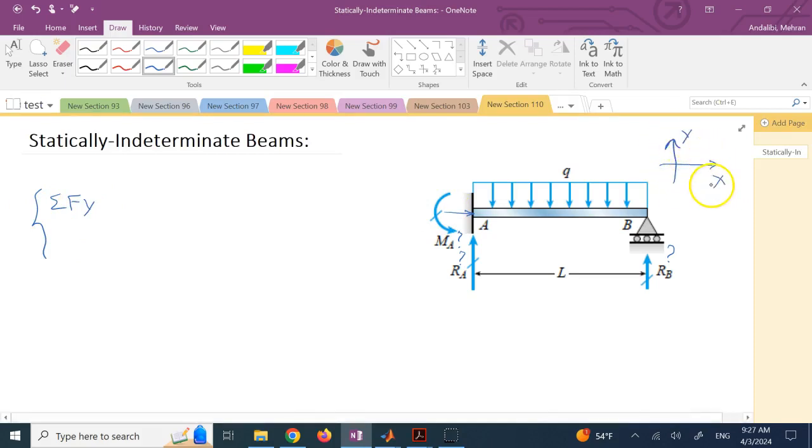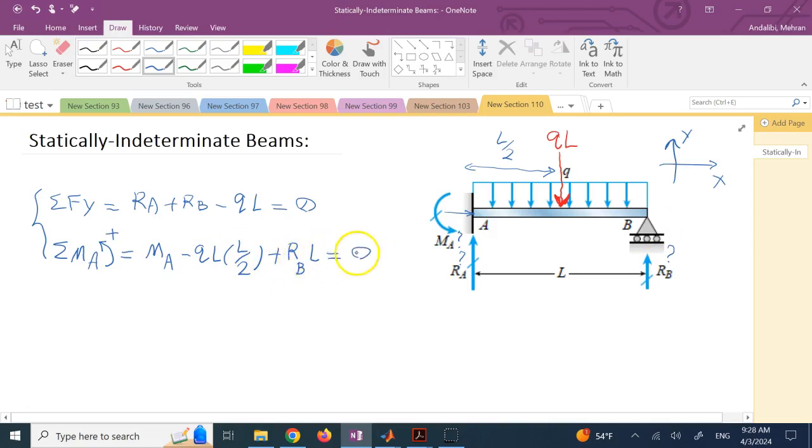Assuming we go with the regular X and Y, the sum of forces in the Y direction equals RA plus RB minus the equivalent force of this distributed load. Since the load density is Q and the length is L, the equivalent load is Q times L at the center because the load is uniform. So RA plus RB minus QL equals zero. Then if you take sum of the moment about point A and go counterclockwise positive, you have plus MA, RA has no moment, QL has a negative moment at distance L over 2, so minus Q times L over 2, and finally plus RB times L equals zero.